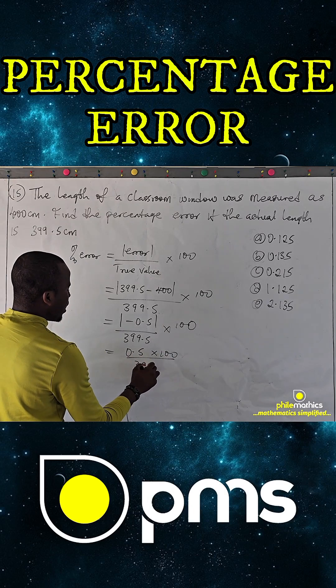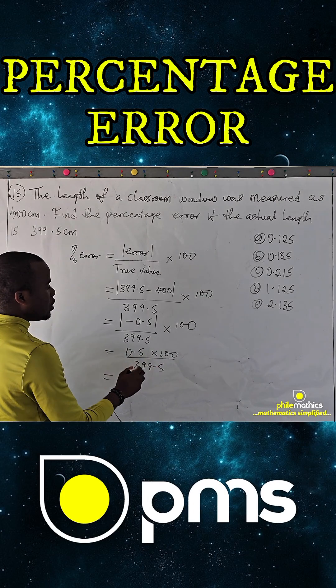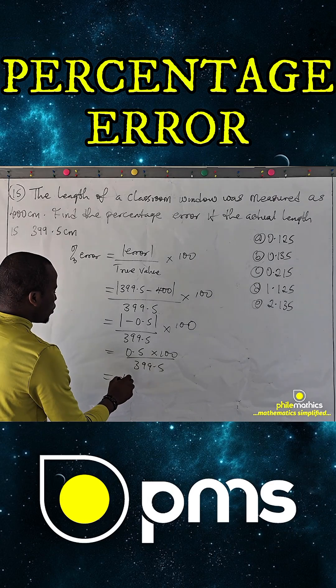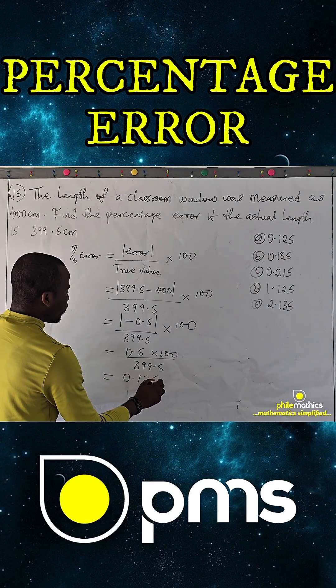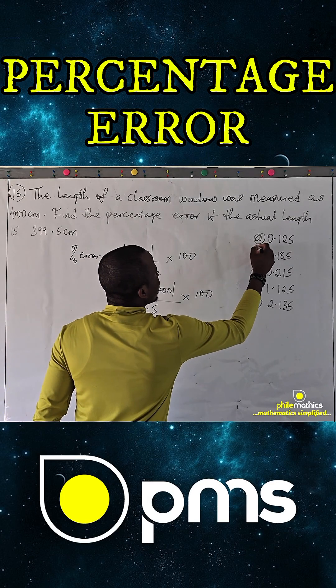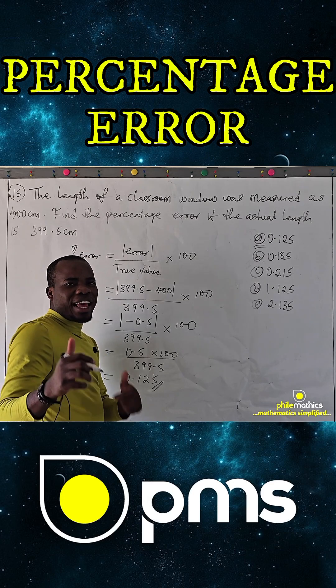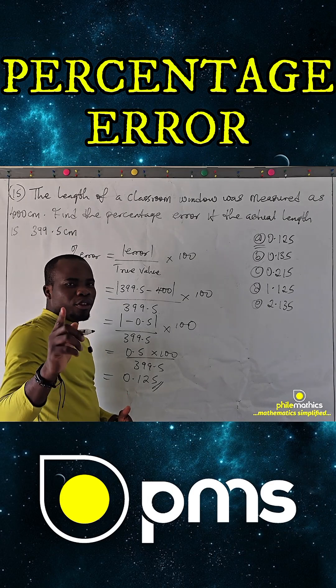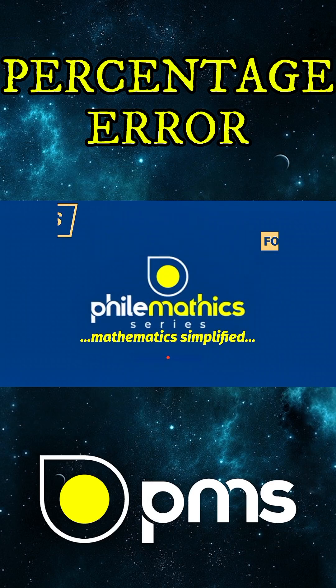If you times this in your calculator, you will get 0.125 and that is simply it. Make sure you like this video and subscribe if you have not done that yet. Thank you.